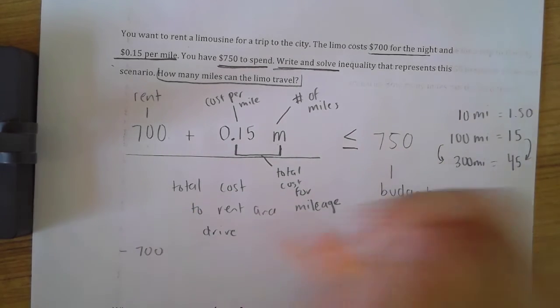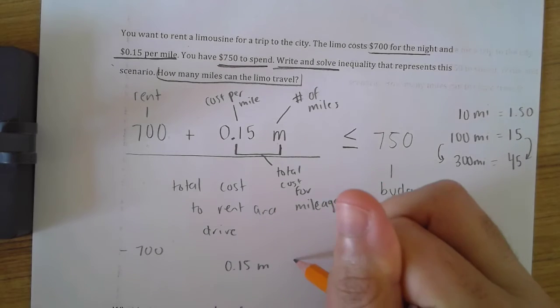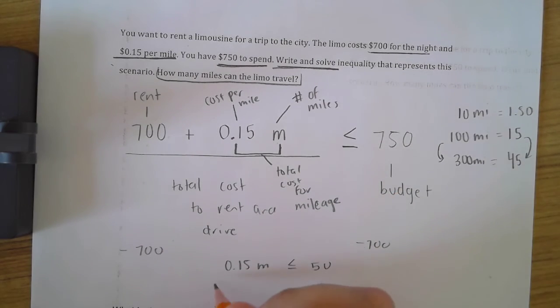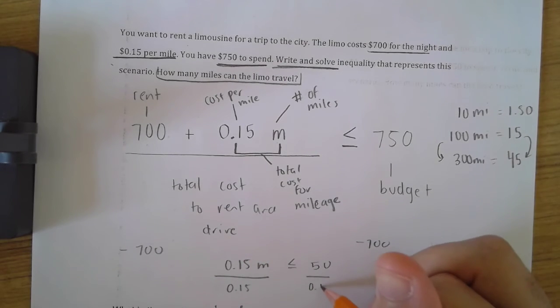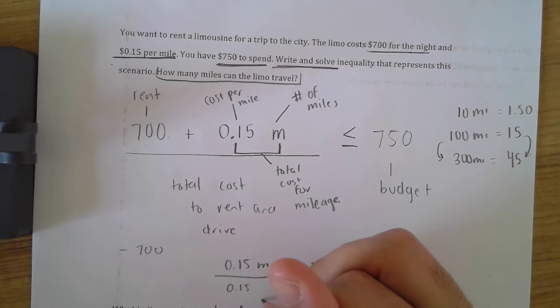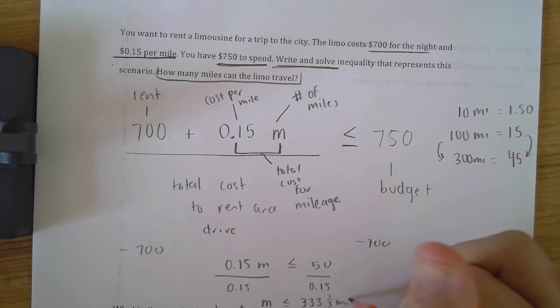If I subtract 700 from both sides, we have 0.15M is less than or equal to 50. At this point, it's just dividing by 0.15, which will leave you with M is less than or equal to, when you do the math, 333 and one-third miles.